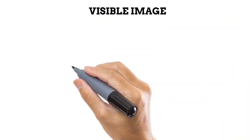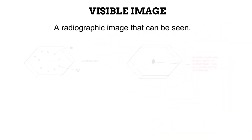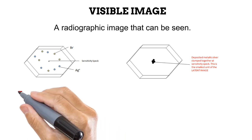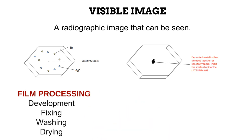In simple terms, a visible radiographic image is one that can be seen. In the last video, we learned that exposure to photons causes a silver halide grain to go through a series of steps that eventually ends up with hundreds of metallic silver atoms clumped together at the sensitivity spec. However, this clump is invisible and needs a process called development to become visible. To produce an image that is not only visible but permanent, a four-stage process is needed: development, fixing, washing, and drying.